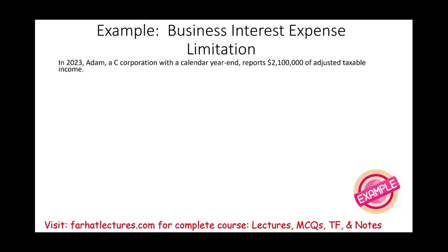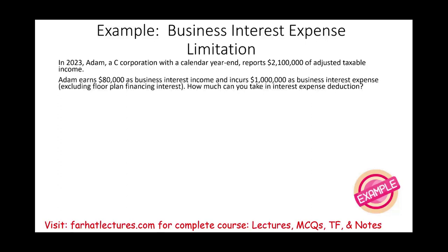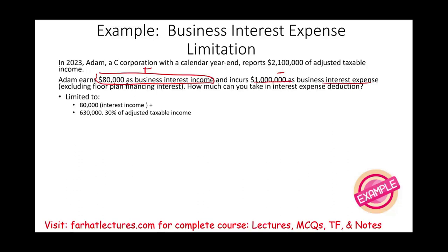Let's look at an example. In 2023, Adam C Corporation, a calendar-year taxpayer, reports $2.1 million of adjusted taxable income. Adam earns $80,000 of interest income and incurred $1 million in interest expense. There is no floor plan financing. How much interest expense can Adam deduct? The formula: deduction is limited to interest income ($80,000) plus 30% of adjusted taxable income (30% × $2.1 million = $630,000). Total limit: $710,000.